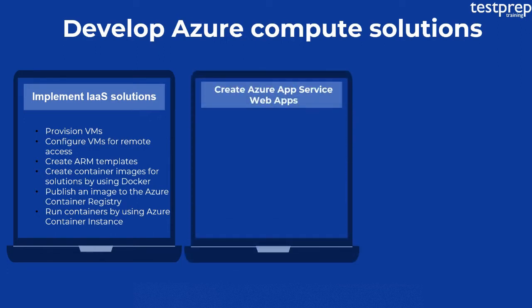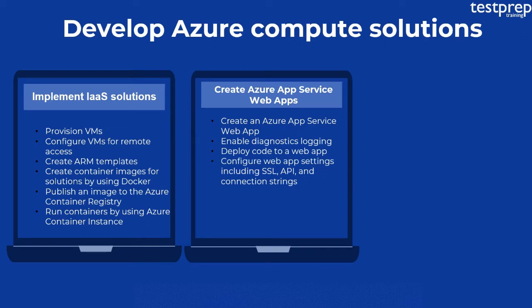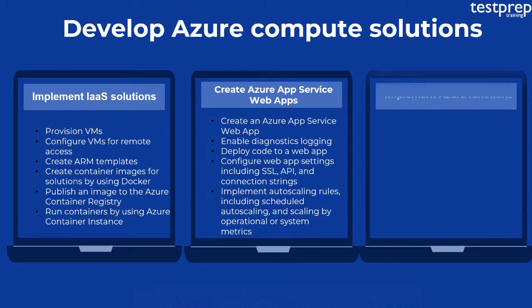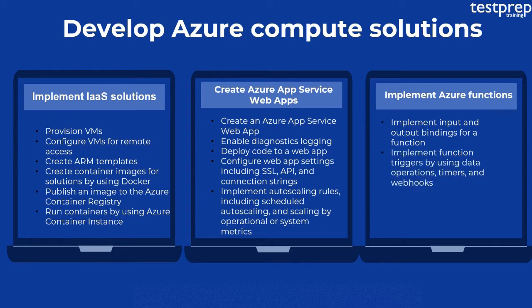Number two: Create Azure App Service Web Apps. It contains five subtopics: First, create an Azure App Service Web App. Second, enable diagnostics logging. Third, deploy code to a web app. Fourth, configure web app settings including SSL, API, and connection strings. Fifth, implement auto-scaling rules, including scheduled auto-scaling and scaling by operational or system metrics. Number three: Implement Azure Functions. It contains three subtopics: First, implement input and output bindings for a function. Second, implement function triggers by using data operations, timers, and webhooks. Third, implement Azure Durable Functions.